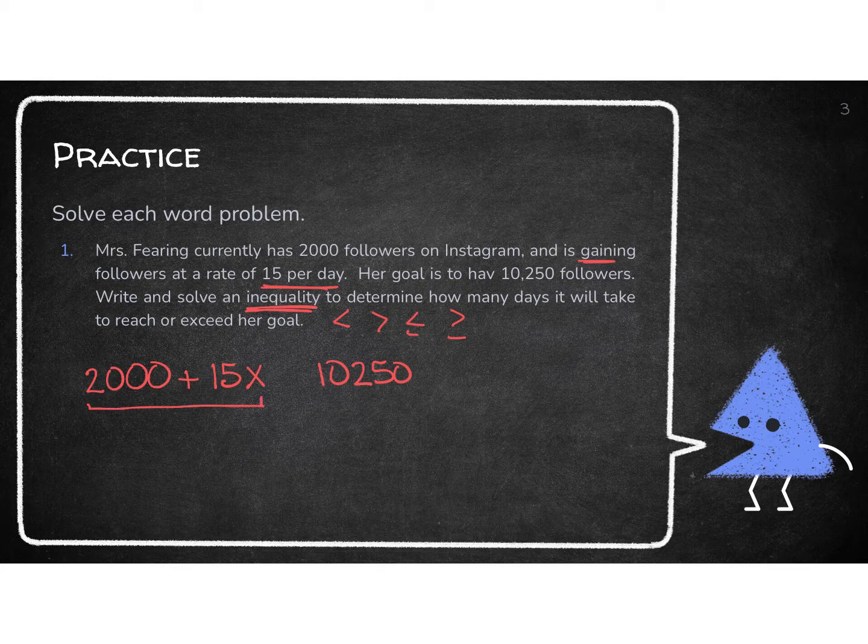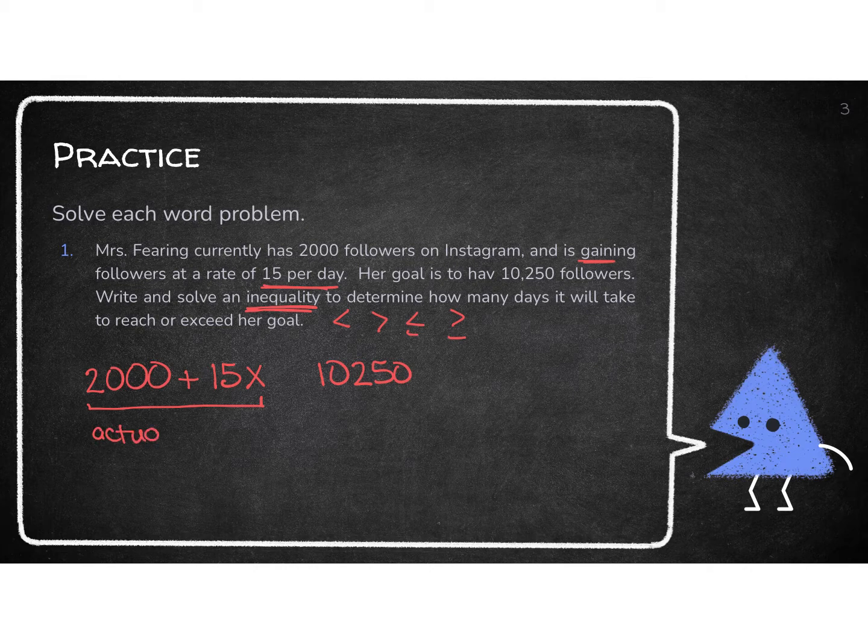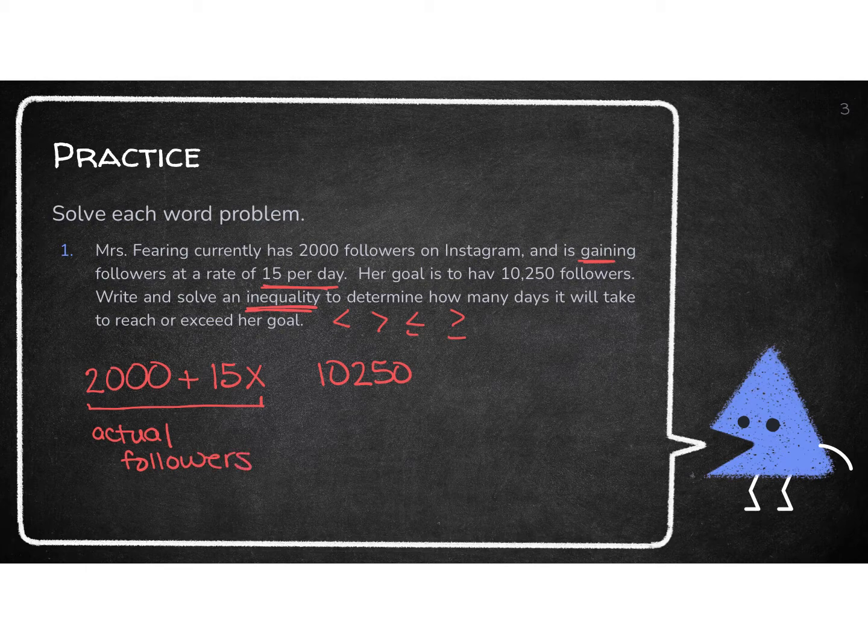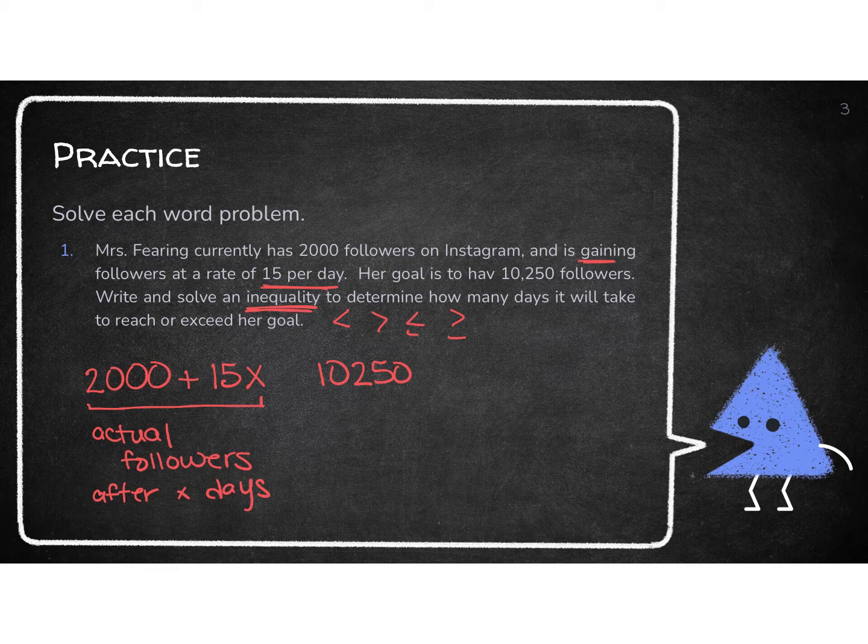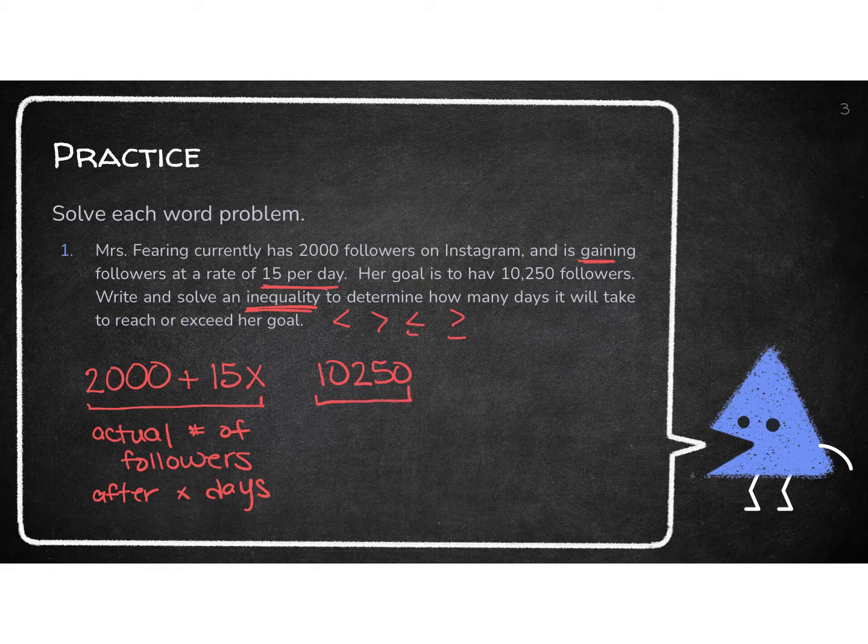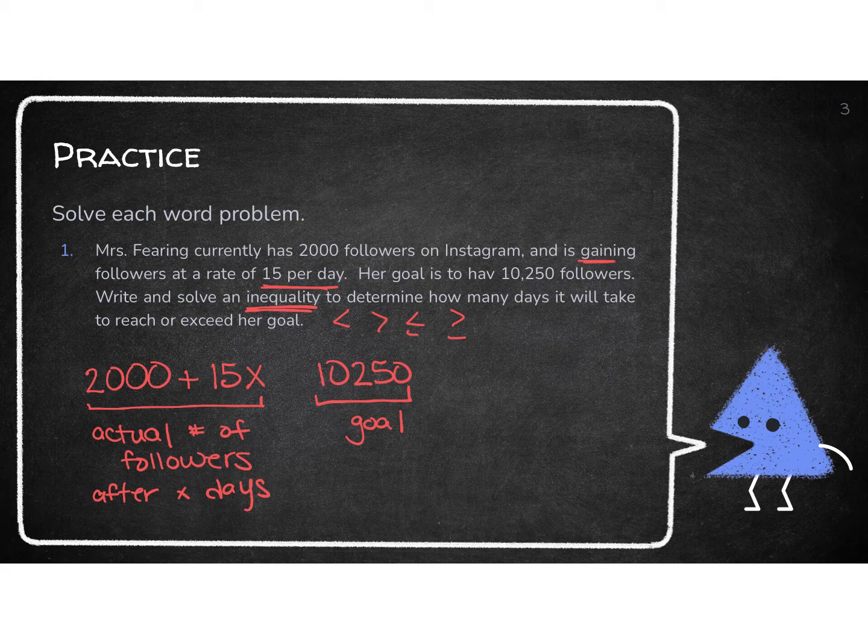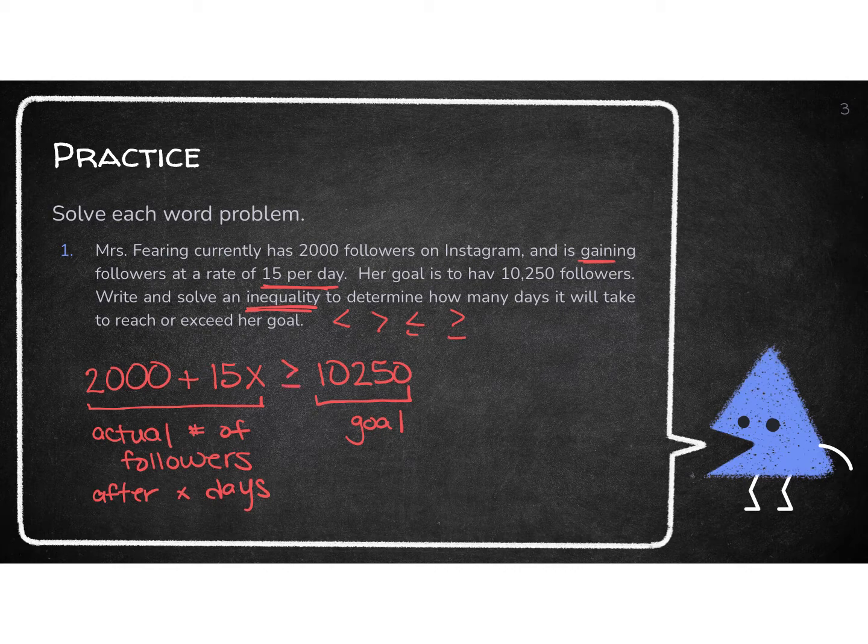This is the number of actual followers that I am going to have after each day. So if X, if I went five days, I'd plug five in for X. If I went 10 days, I'd plug 10 in for X. But this is the actual number of followers. So the total. So an actual number of followers. And this is my goal. So I have to think to myself, do I want the actual number of followers to be bigger than my goal or less than my goal? Well, I want it to be bigger than or equal to. I want my followers to be bigger than or equal to that goal.